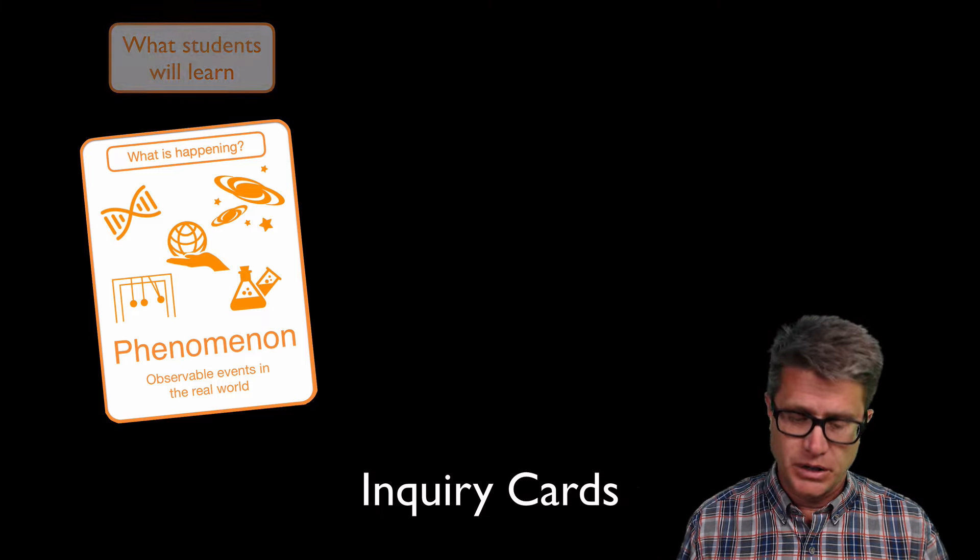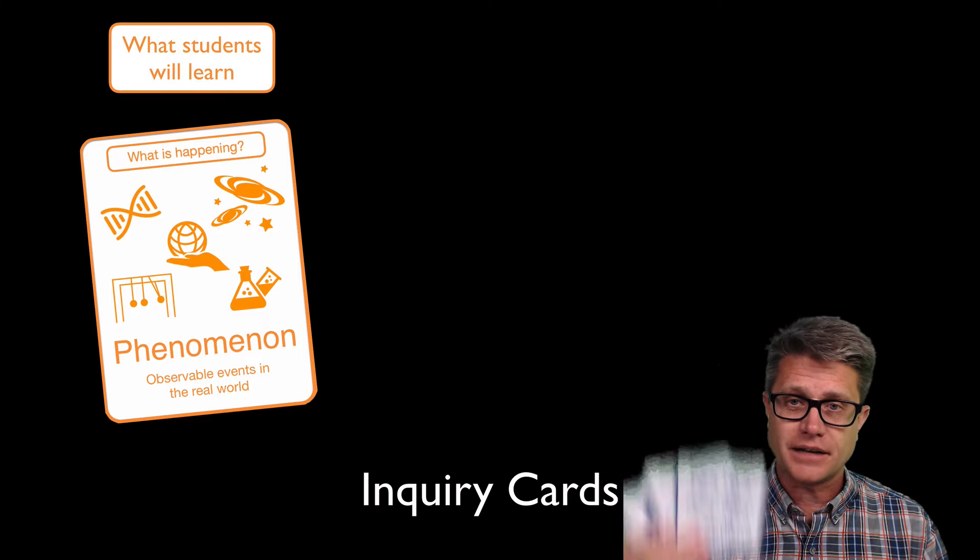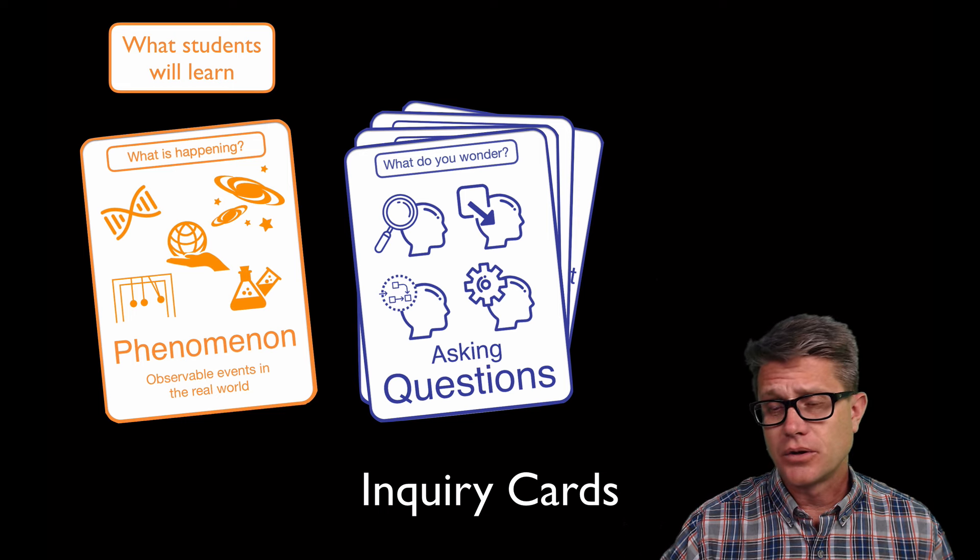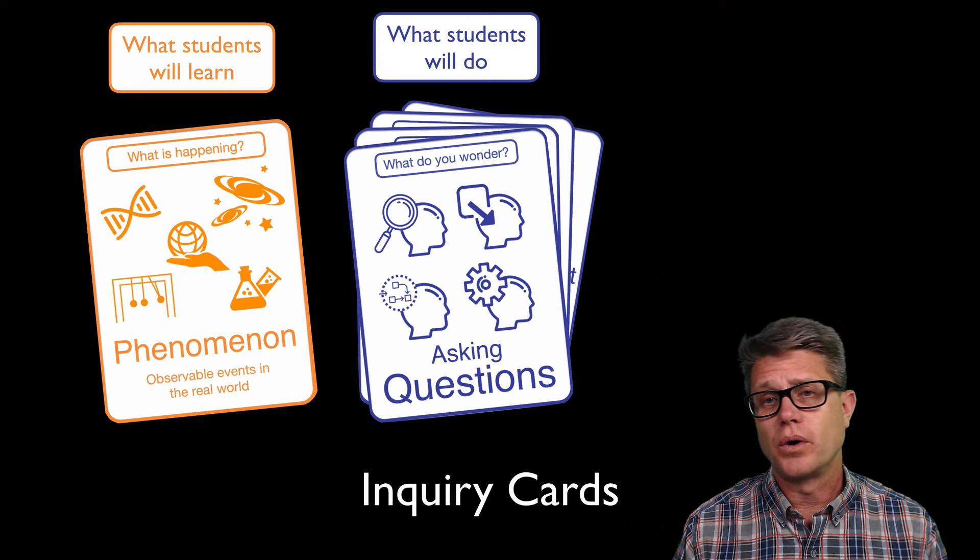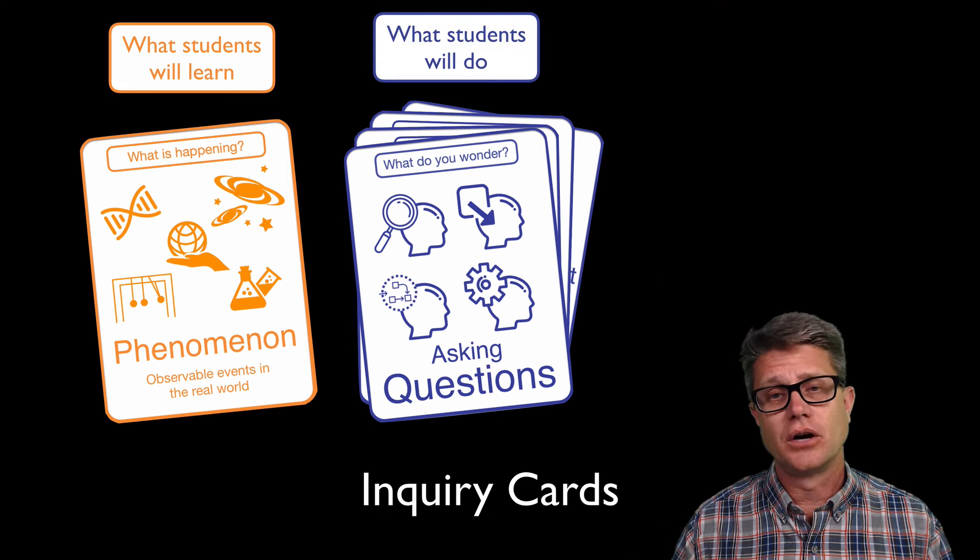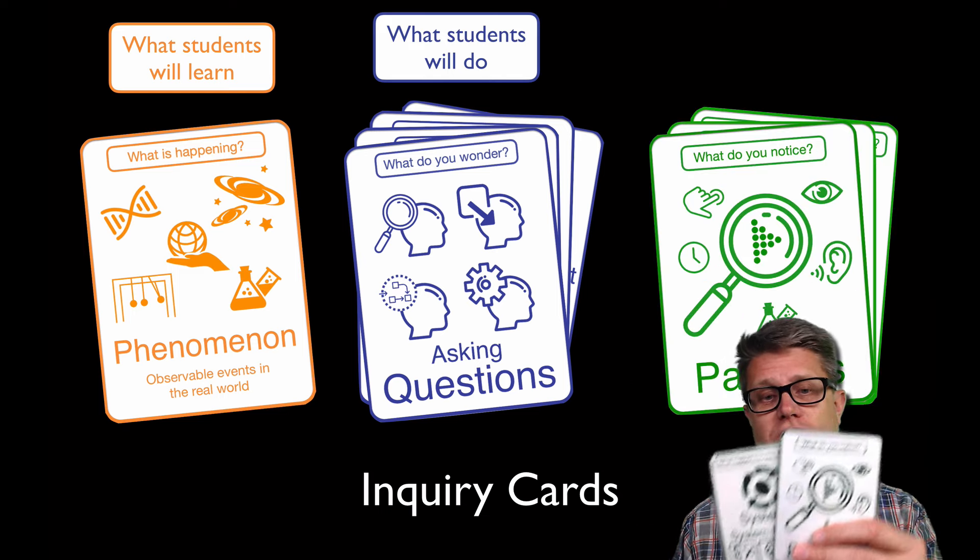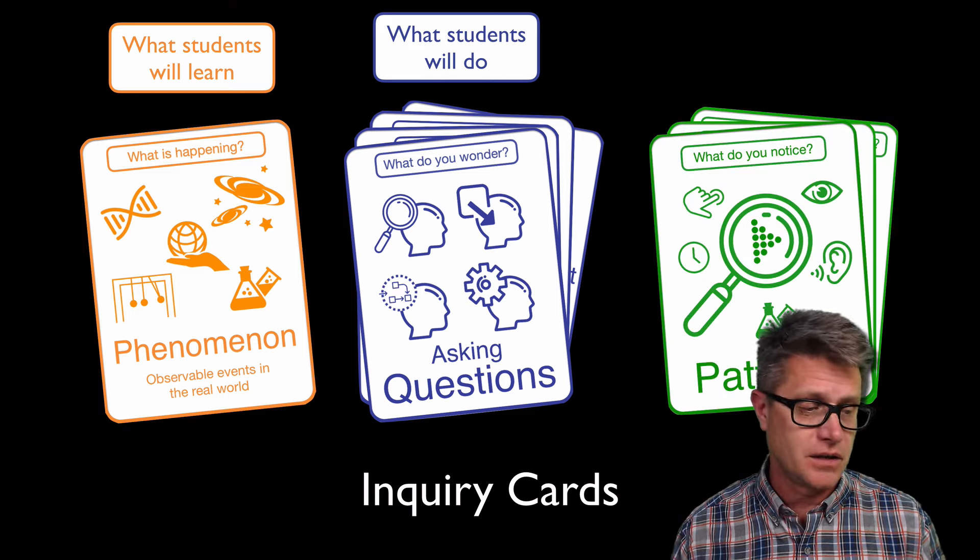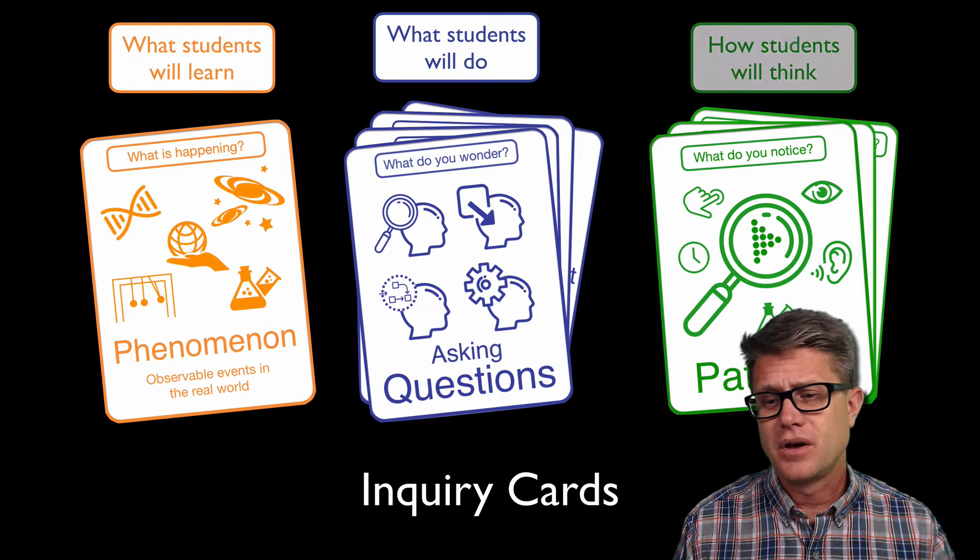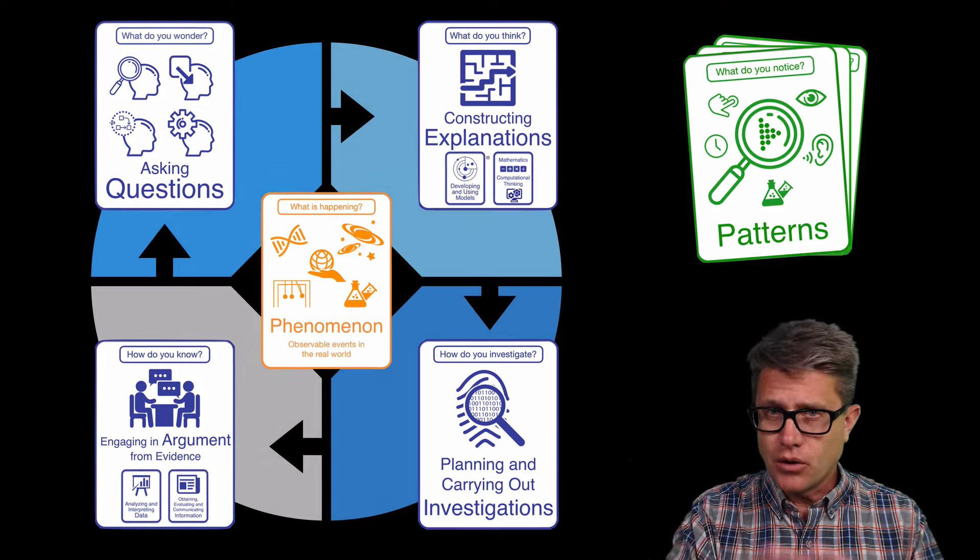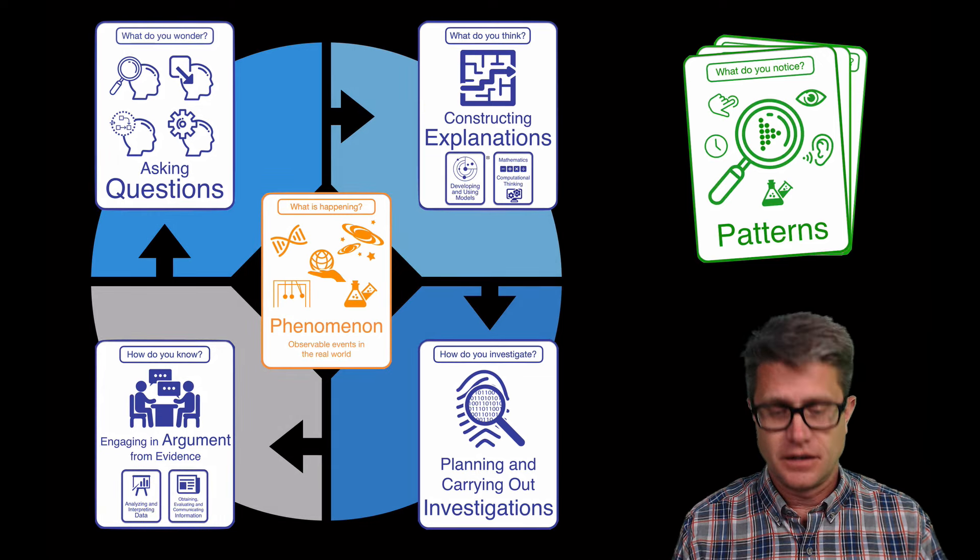The next set of cards are going to be blue, and those are based on the practices. Those are the practices in the Next Generation Science Standards. What those really are is they are telling the students what you are going to do. There are notes on the back of those for me as a teacher. And then finally you have the green cards which are going to be the cross-cutting concepts. And they are going to tell the students how to think. If we ever get stuck those cross-cutting concepts will come in handy.